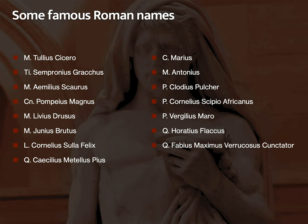Just to reinforce the point about the praenomen: looking at the list on screen, out of all these people there are only seven distinct praenomina — Marcus, Tiberius, Gaius, Lucius, Quintus, Publius, and that's it. The praenomina are useless for identification except within the family.